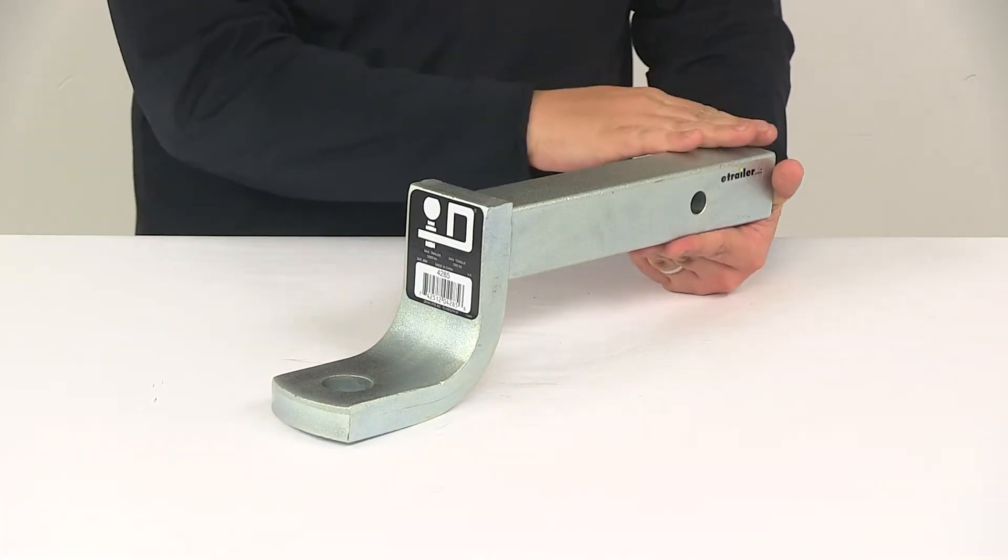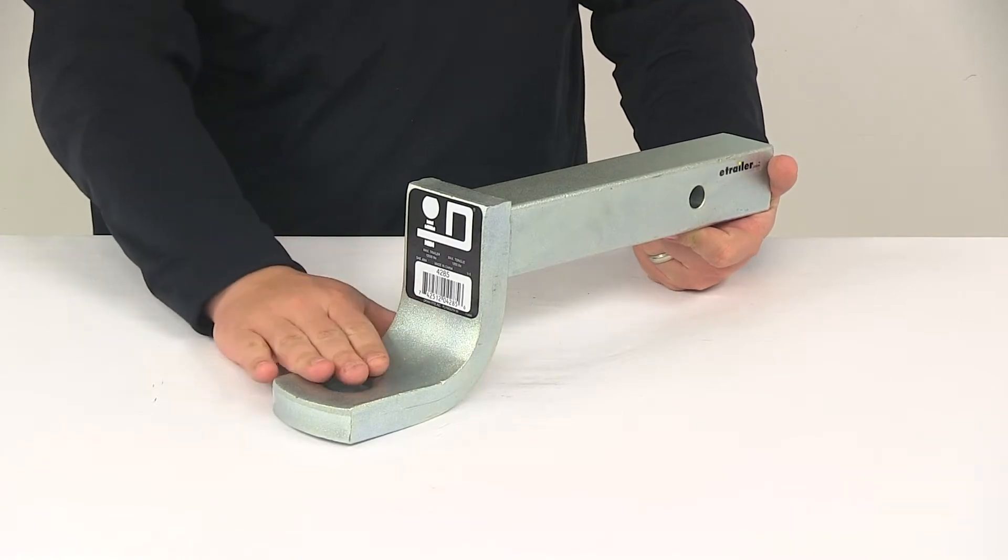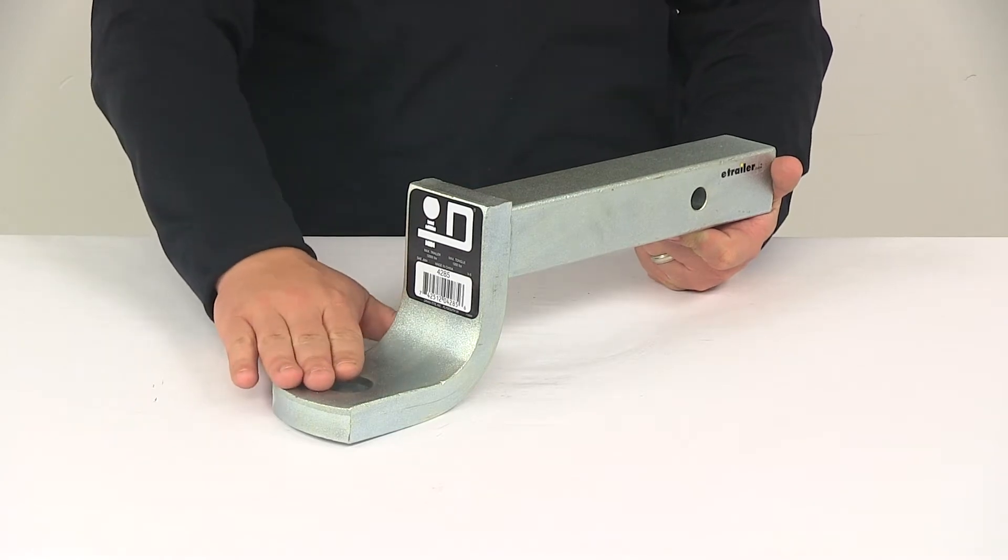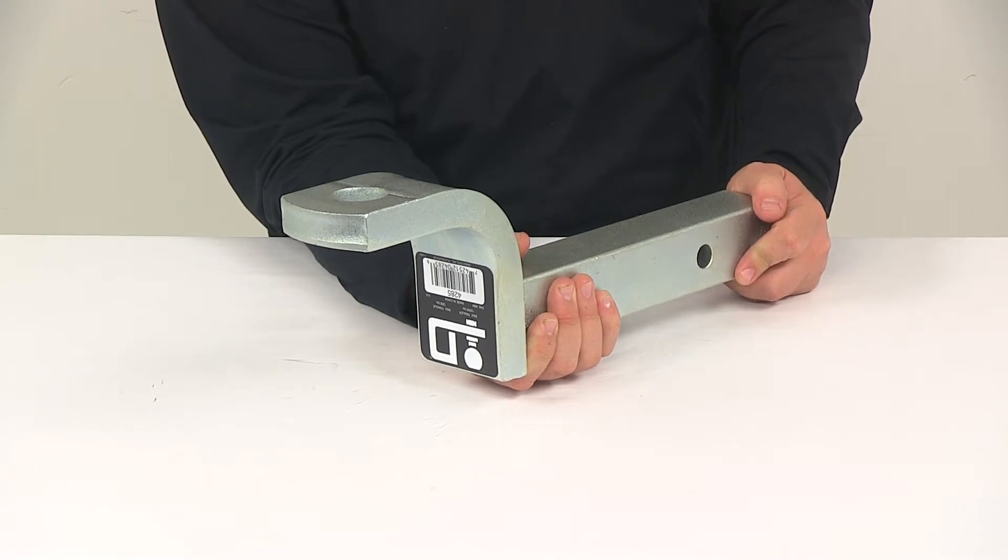If you're using this in the drop position, which would be this position here, it's going to give you a maximum drop of 4 inches. That's measuring from the inside top edge of the receiver tube of your hitch to the top of the ball platform. If you're going to use it in the rise position, it's going to give you a rise of 3 inches.